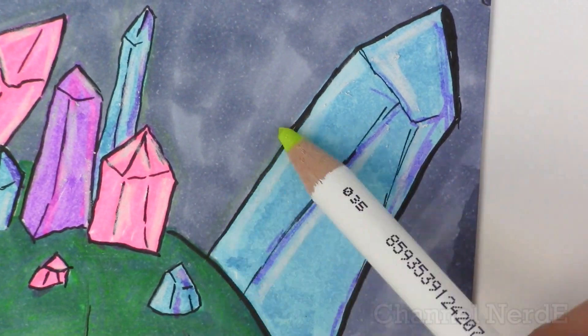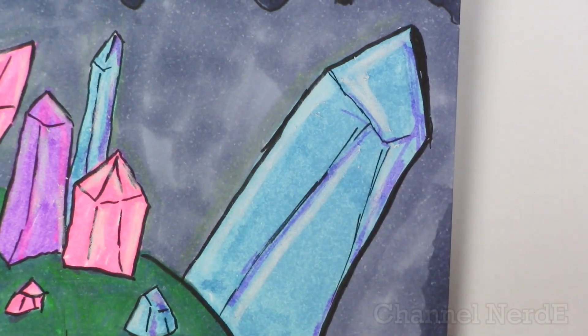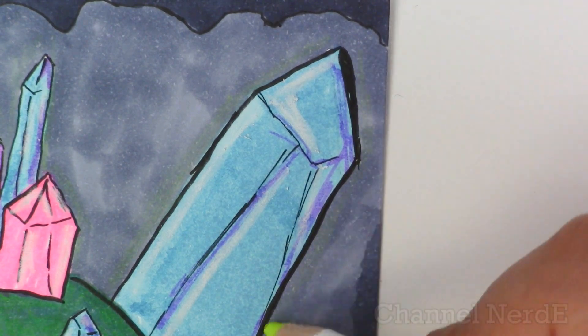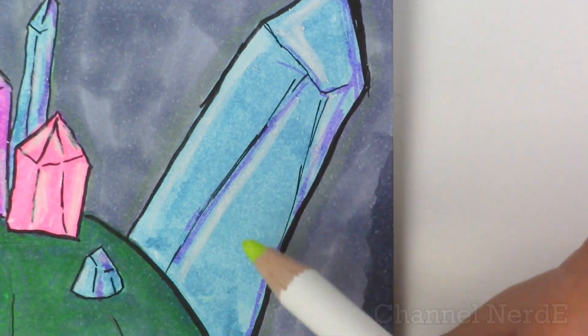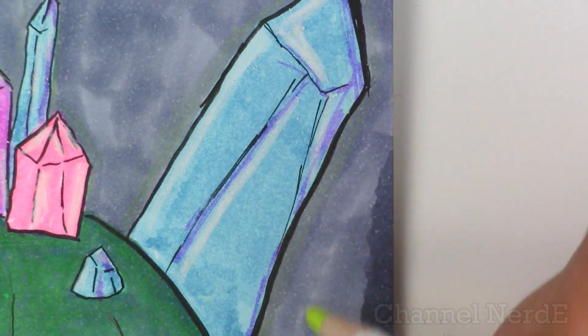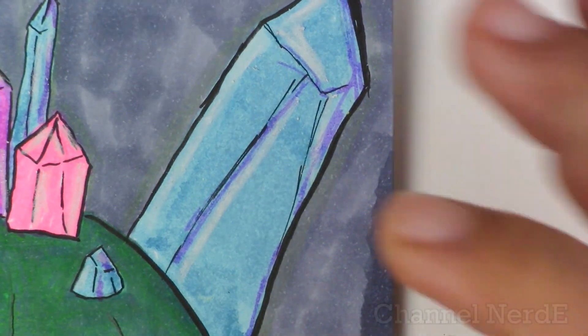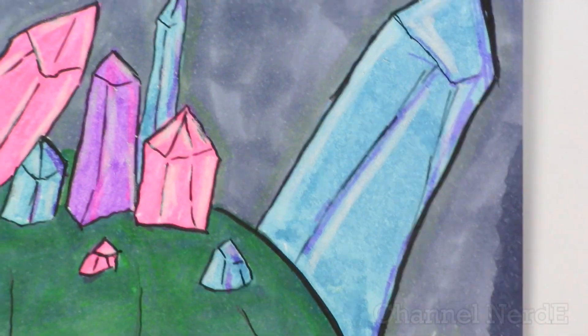I wanted the crystals to have this kind of emanating light feeling so I took the dry marker in yellow and I went around the edges of the marker to give it this kind of shiny light feel to it.